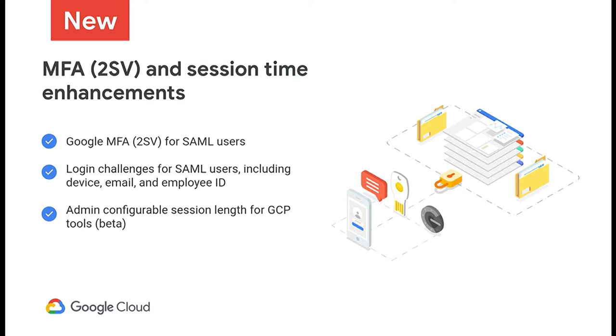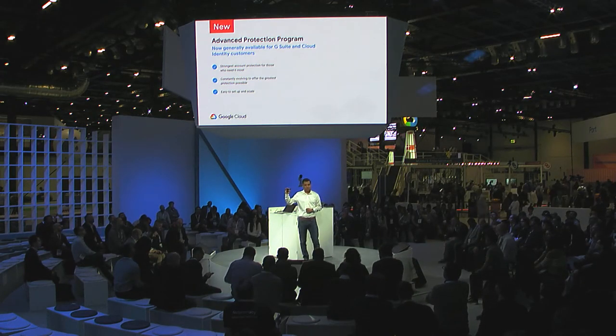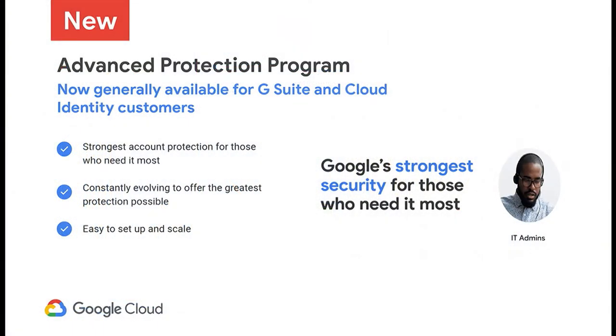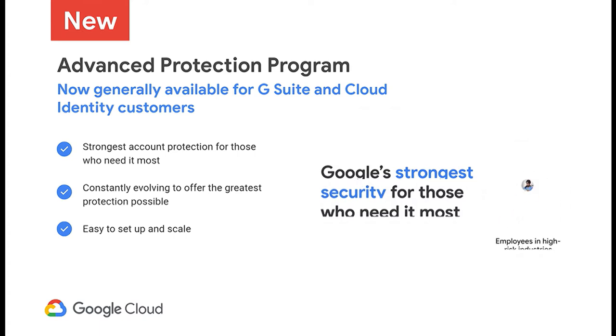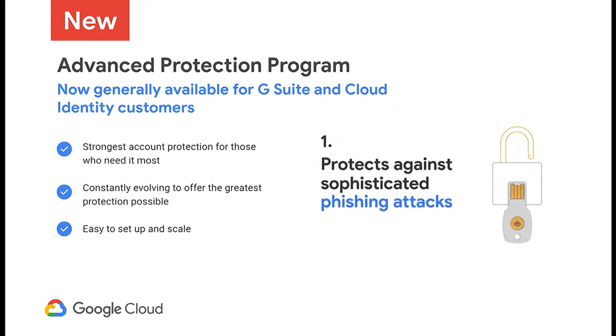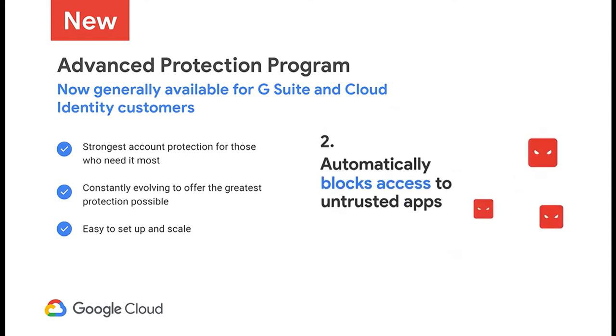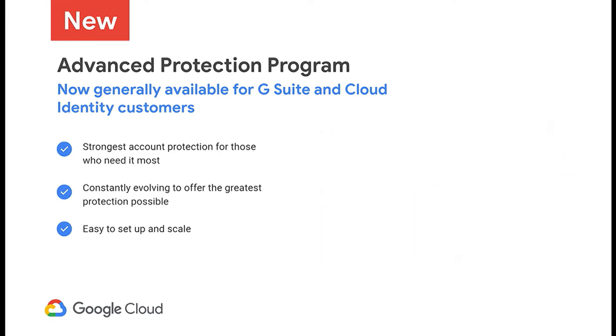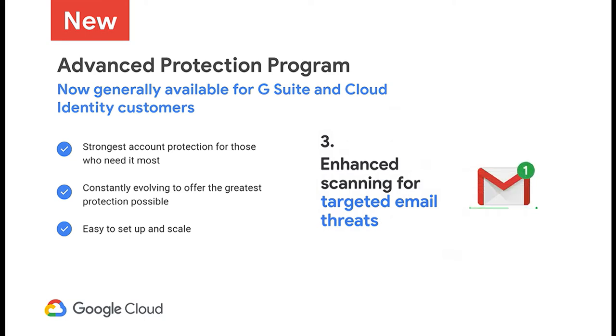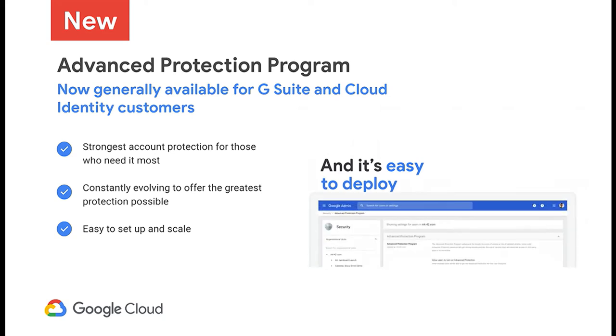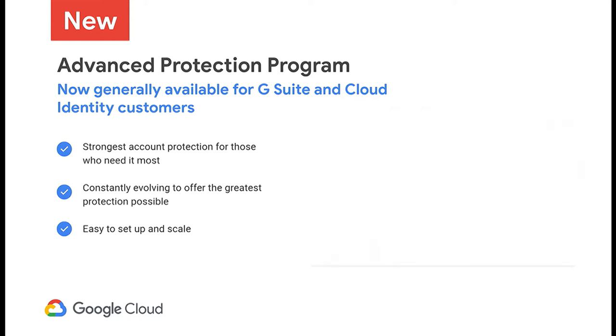We also introduced session control length, one of the most requested features, which allows admins to configure how long an admin session lasts for GCP tools — important given the sensitive data and production systems running on GCP. Finally, to secure your highest-risk users, we introduced the Advanced Protection Program. Once enrolled, these users automatically get the most secure features Google recommends: they must use security keys, all apps must be whitelisted by admins to prevent malware, and any new security features we recommend for high-risk users will be automatically enabled.